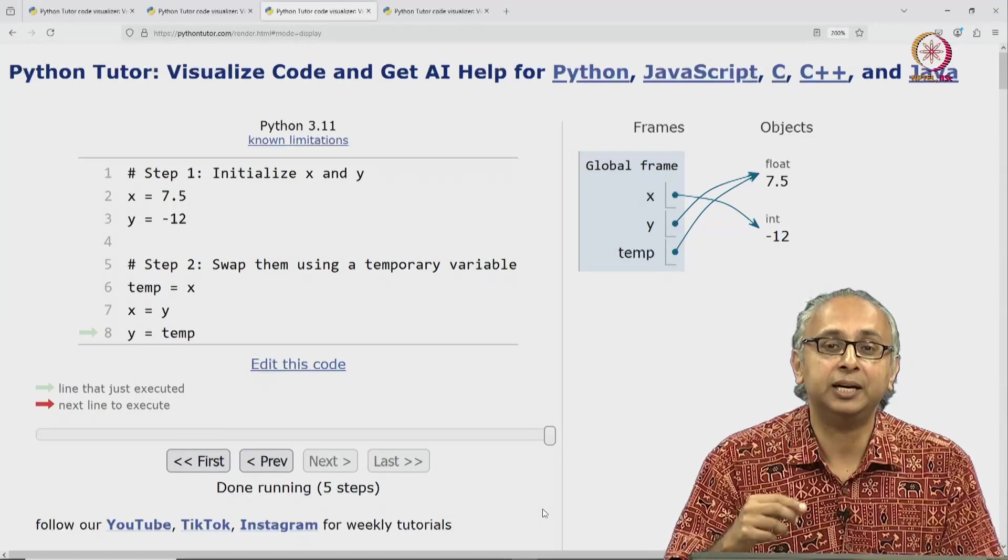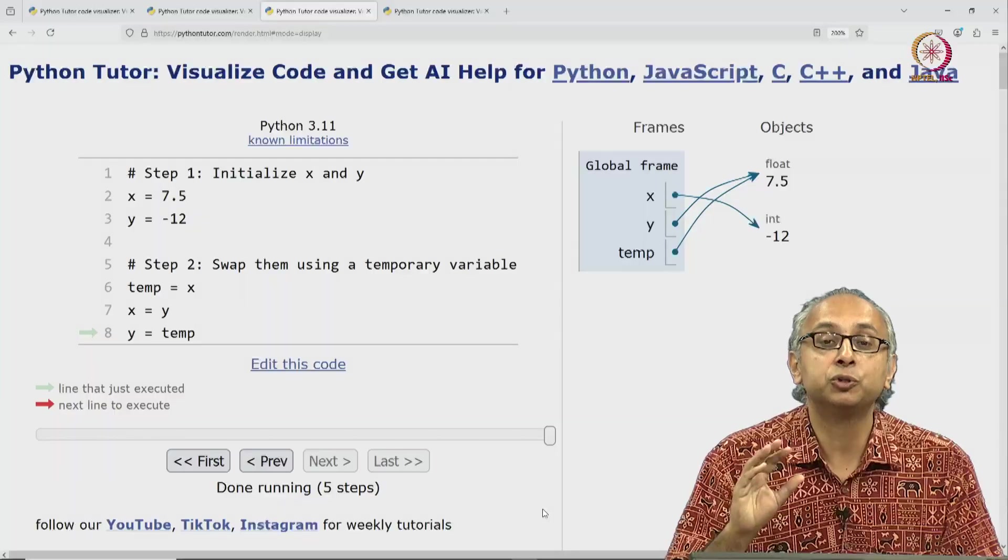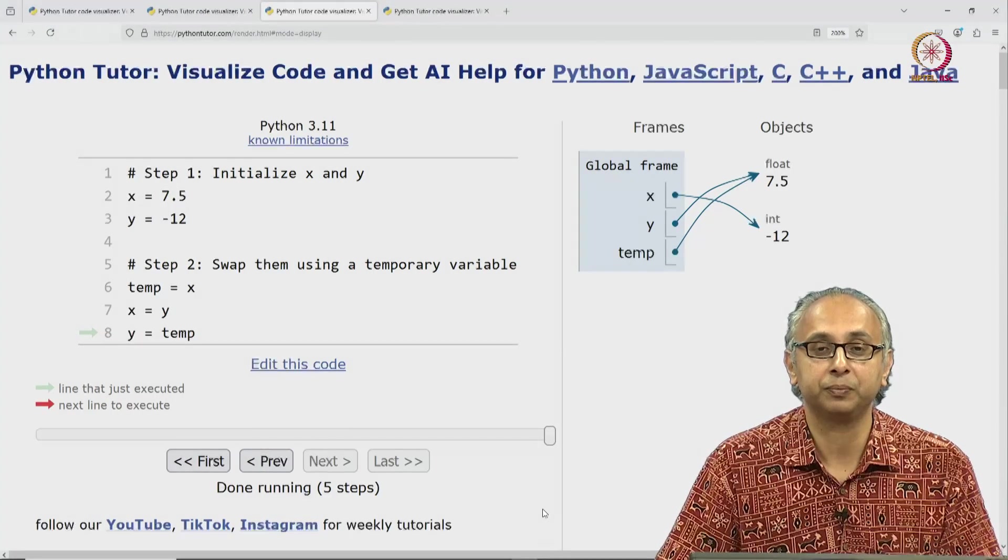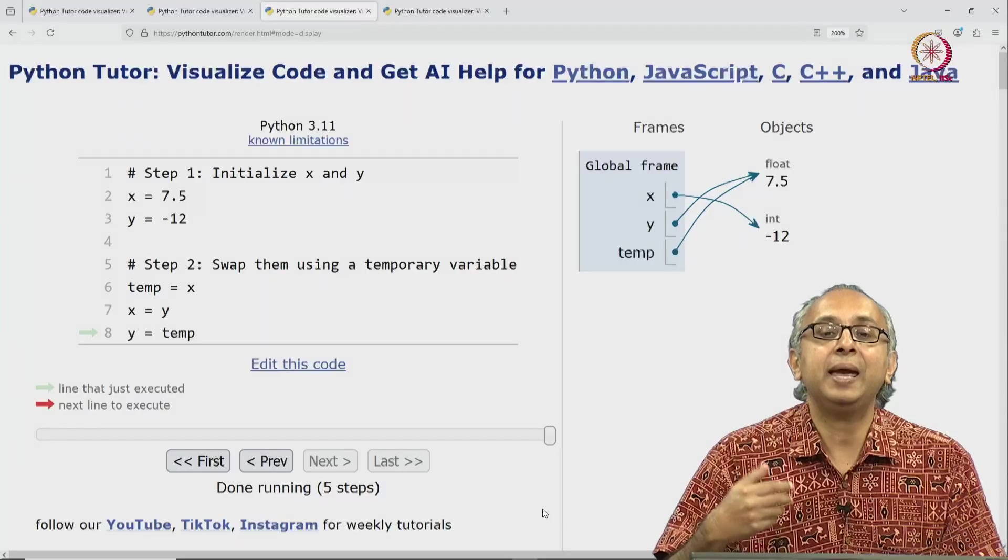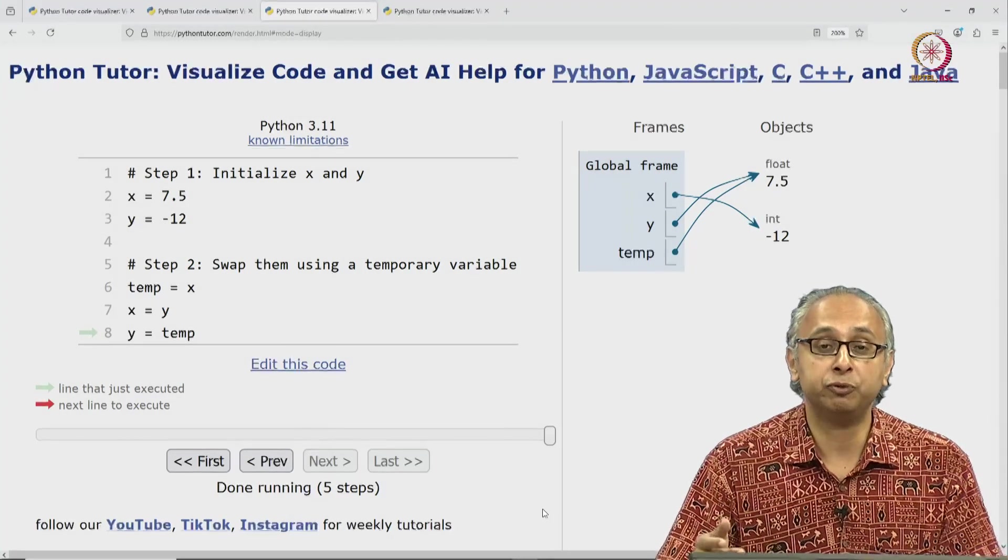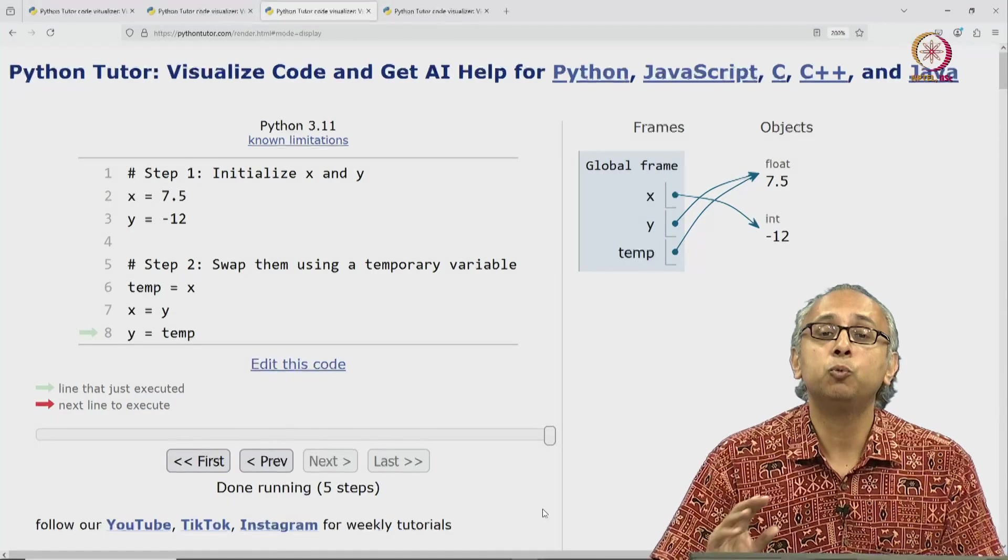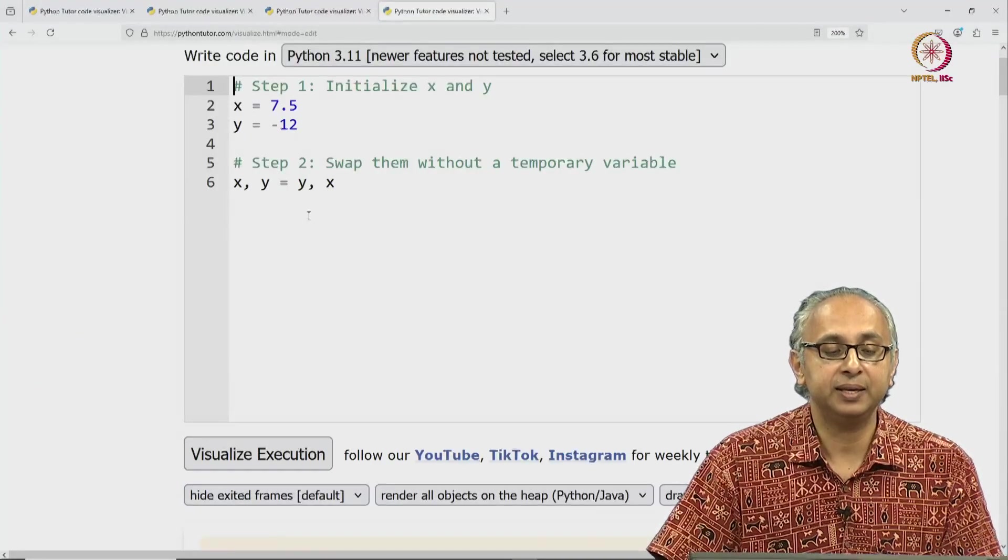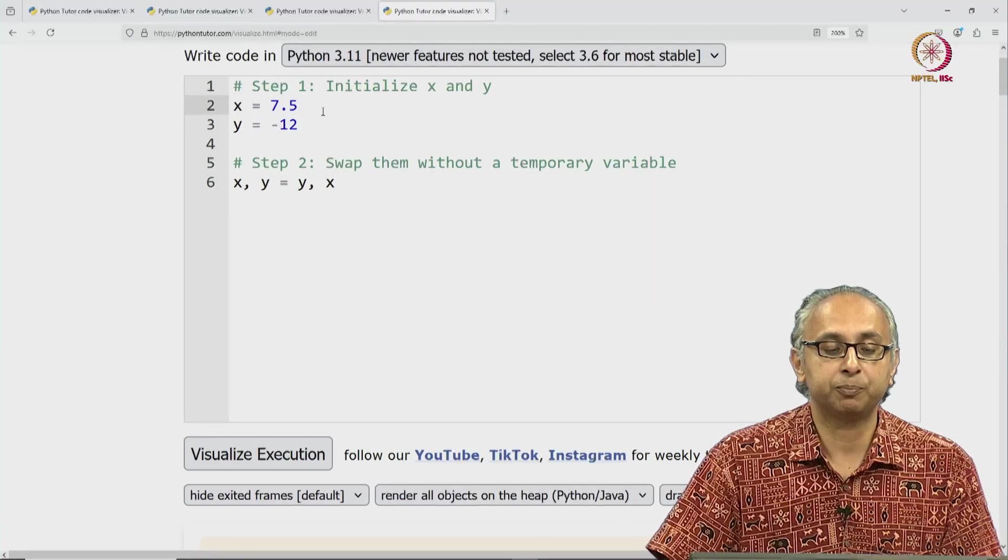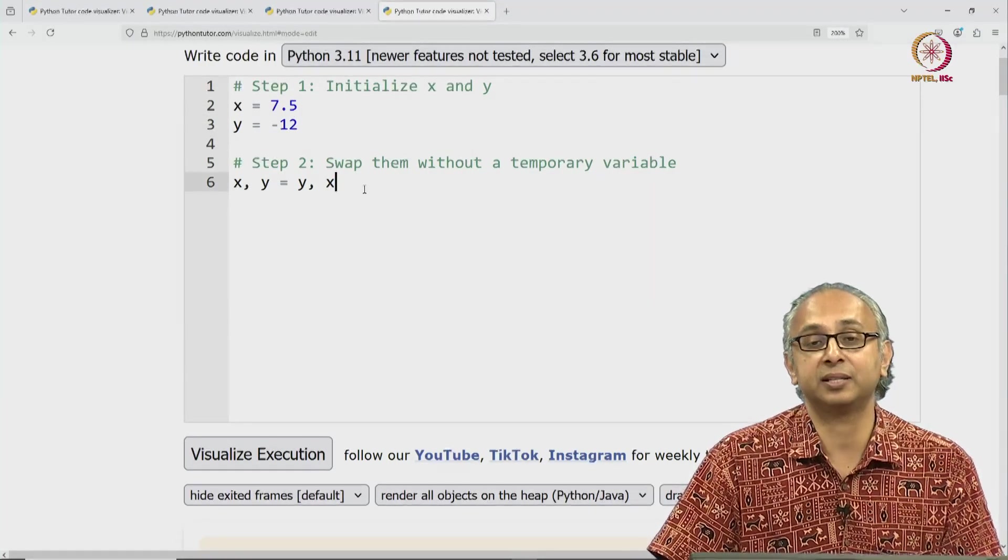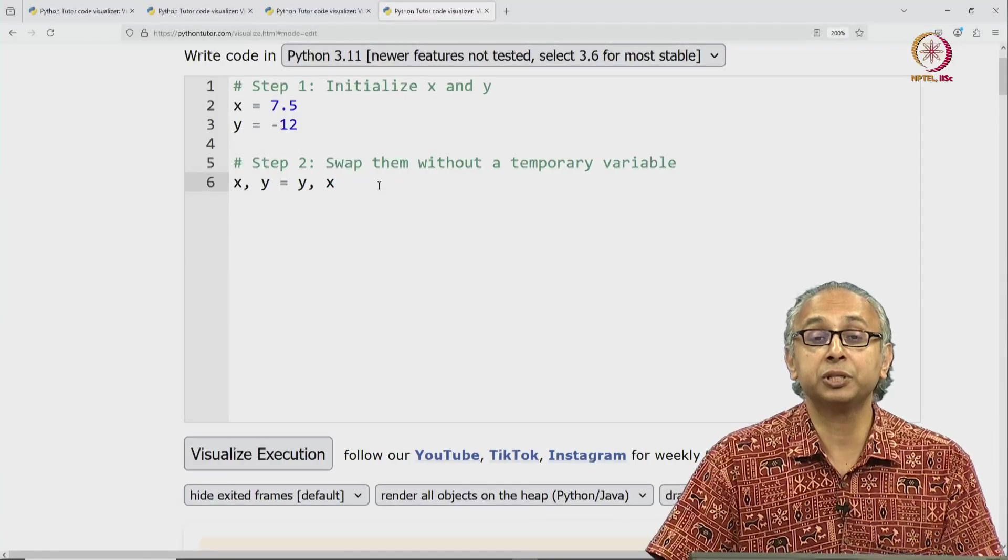It uses a temporary variable to make sure we don't lose any information. Now, you may hear people say that it's possible to swap two variables in Python without using a temporary and the code they have in mind is something like this. Suppose x and y have the same values as before, you can have this assignment statement. This looks a little bit complicated.